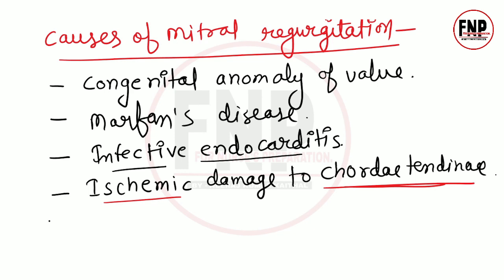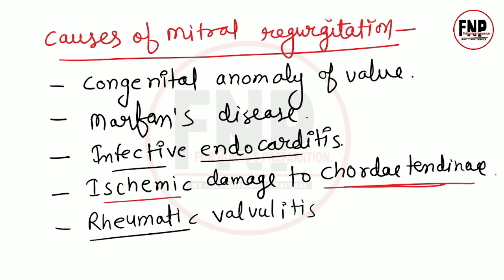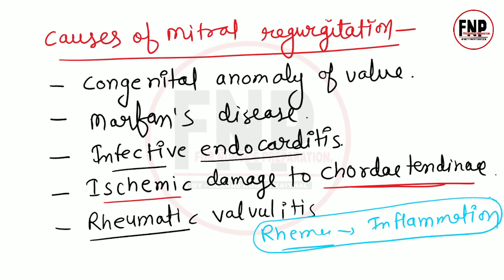पाँचवाँ cause है rheumatic valvulitis। Rheum शब्द का मतलब inflammation होता है। अगर heart के valve के अंदर rheumatic fever के कारण inflammation आ जाए तो यह condition rheumatic valvulitis कहलाती है। Valve मोटे हो जाते हैं, inflammation आ जाती है, ये actively काम नहीं कर पाते, close नहीं हो पाते और client में mitral regurgitation जैसी condition हो जाती है।